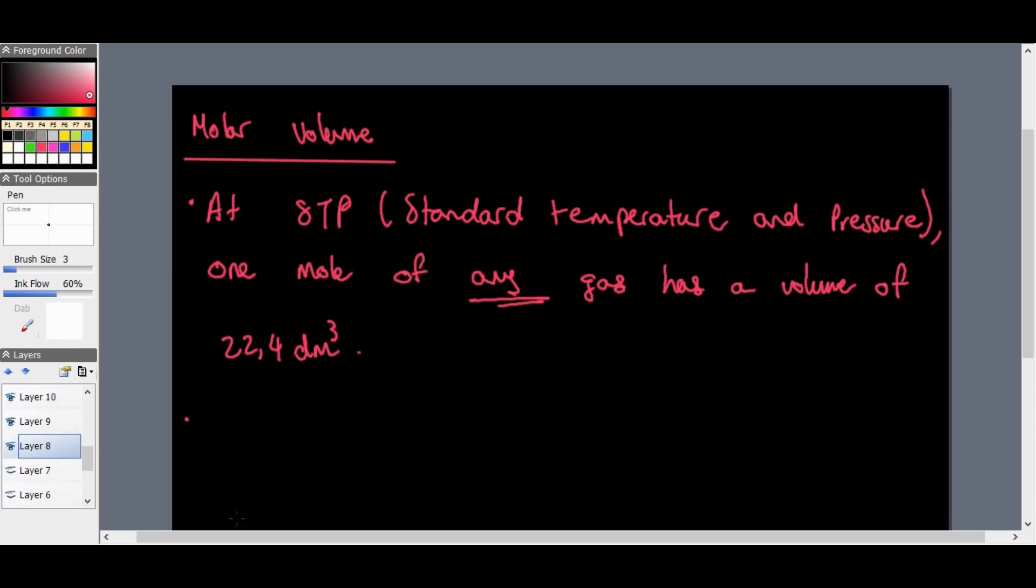Now also another thing about STP, standard temperature is zero degrees Celsius. And standard pressure is 101,3 kPa, which is what pressure is measured in pascals. So kPa is kilopascals, which is equal to one atmosphere pressure.